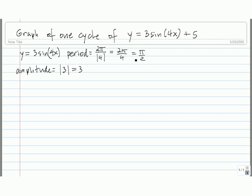The next thing we're going to do is mark off one full length of the period. The period is pi over 2. And then we're going to take the interval from 0 to pi over 2, that one cycle, and we're going to divide it into 4 pieces.